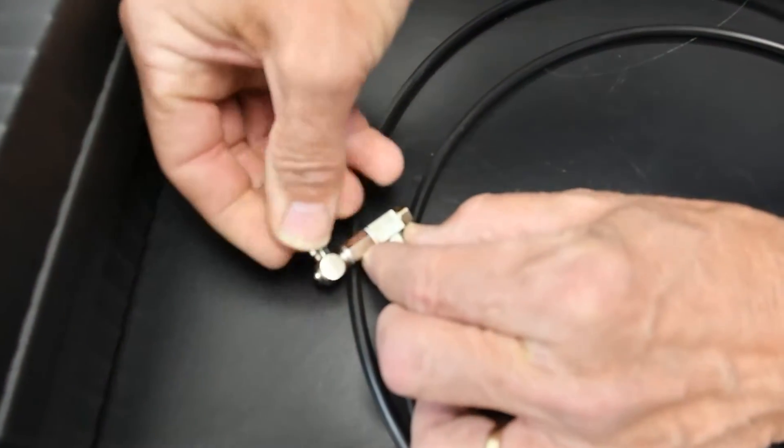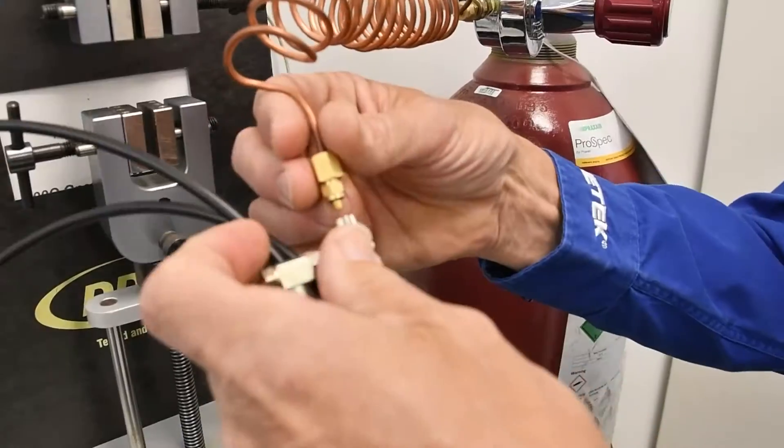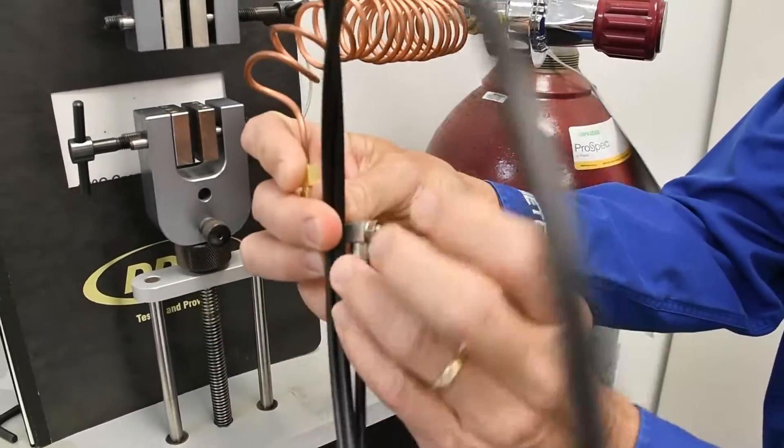Remove the plastic fitting from the pressure relief kit. Install the pressure relief kit onto the nut, ferrule, and copper tubing.